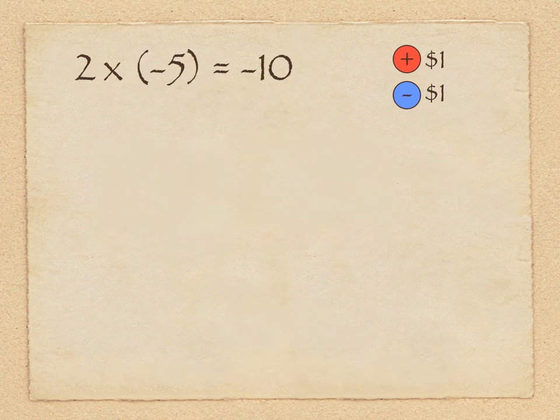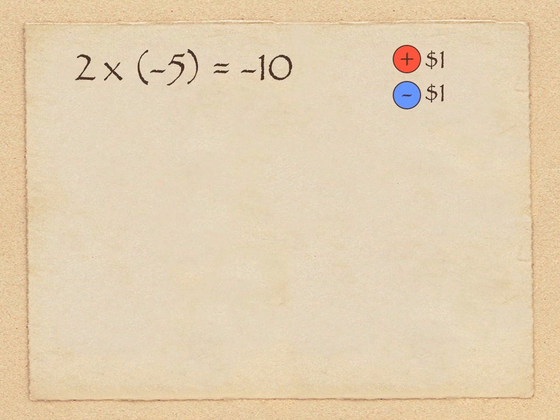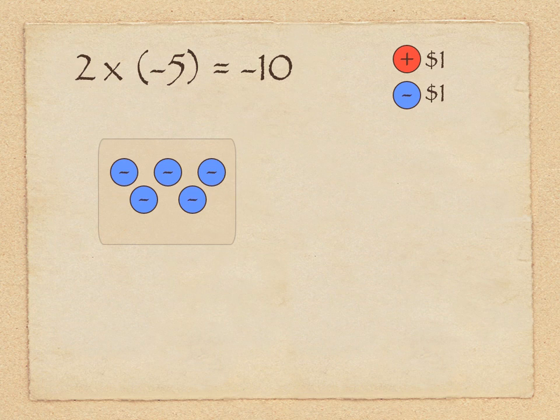Next, let's look at multiplying 2 times a negative number and why the product is negative. So this is a bit more of a challenge to understand conceptually.